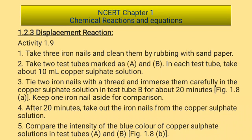Take three iron nails and clean them by rubbing with sandpaper. Take two test tubes marked A and B. In each test tube, take about 10 ml copper sulphate solution. Tie two iron nails with a thread and immerse them carefully in the copper sulphate solution.